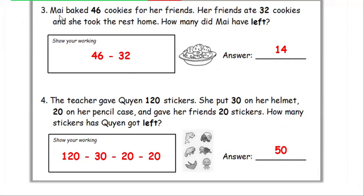Number 3. My pack — 46 cookies for her friends. Her friends ate 32 cookies and she took the rest home. How many did she have left? 46 minus 32. Answer: 14.